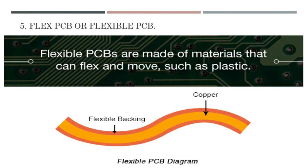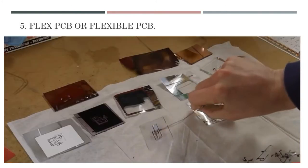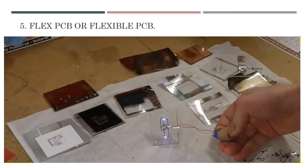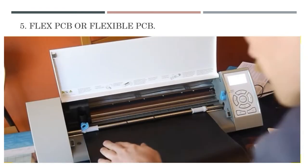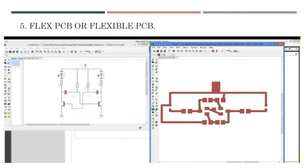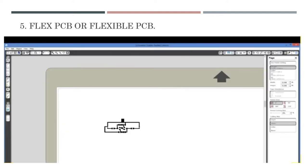Flex PCB or flexible PCB. Unlike rigid PCBs, which use unmoving materials such as fiberglass, flexible PCBs are made of materials that can flex and move, such as plastic. Like rigid PCBs, flexible PCBs come in single, double or multi-layer formats.